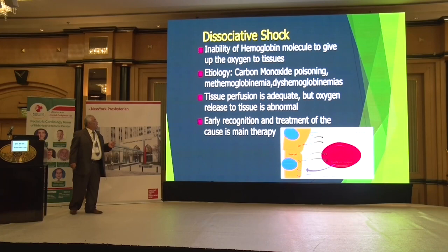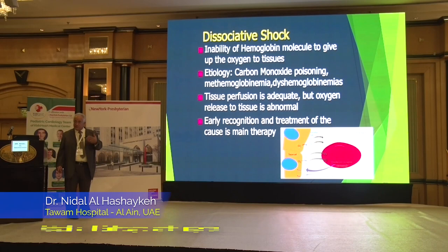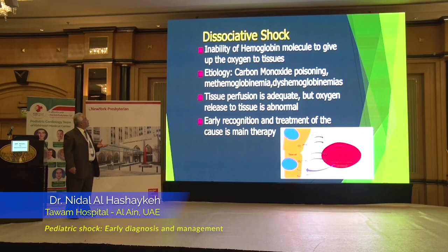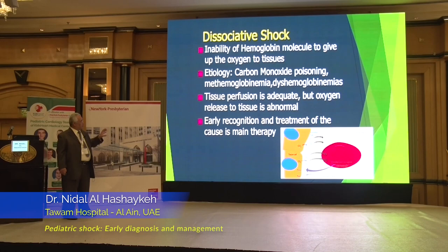In dissociative shock, perfusion is good but oxygenation is not — hemoglobin is not delivering oxygen to the tissues, as in carbon monoxide poisoning, methemoglobinemia, and dyshemoglobinemias. If you don't have a high index of suspicion it is difficult to diagnose, because tissue perfusion is good. But if you do blood gases you will see hypoxemia. Early recognition and treatment of the underlying cause is the main therapy.